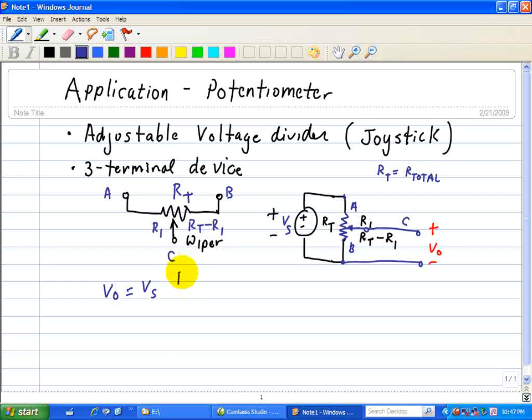And we have RT minus R1, that's the resistance, this lower part, which is the voltage across V0. And then this is just RT.